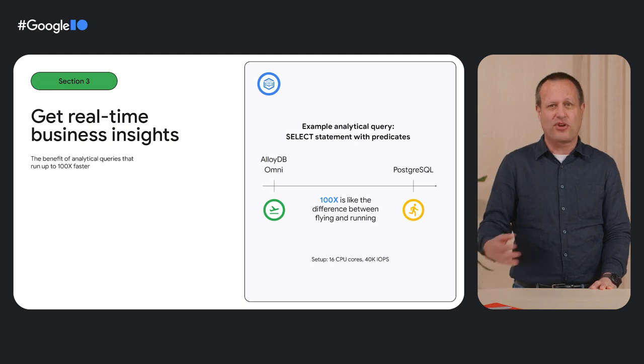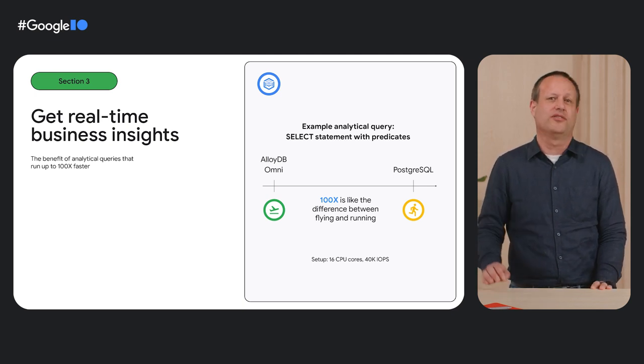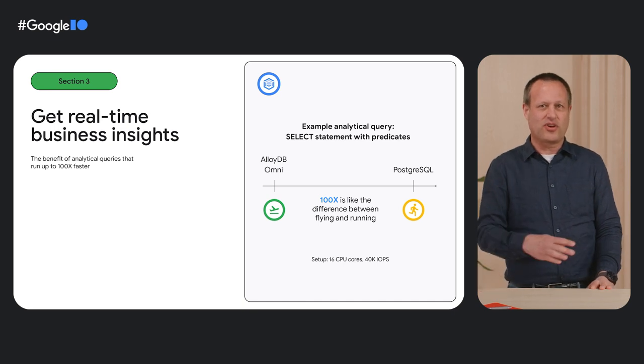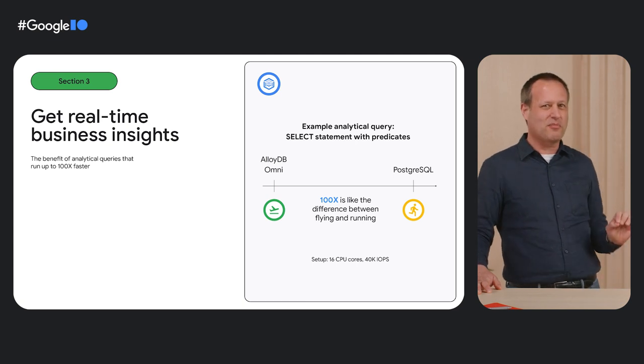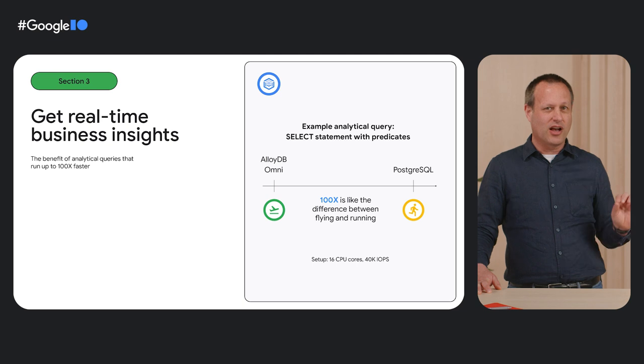Now that you have a downloadable database that runs analytical queries up to 100 times faster, your decision making is much closer to real-time. You can get business insights from your operational data by running queries directly on the database. I was looking for a way to illustrate a 100x difference in speed — I looked up the speed of a Boeing 787 on Wikipedia and it has a maximum speed of 690 miles per hour. A good runner can do about 6.9 miles per hour, which is equivalent to finishing a marathon in just under four hours. We don't want our customer queries to feel like a real marathon.